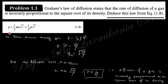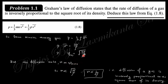We must prove this from equation 1.8, which is the pressure equation from kinetic theory of gas: pressure equals one-third ρ·v_rms². From this, v_rms equals the square root of 3P/ρ. Since the diffusion rate R must be proportional to the RMS velocity — higher velocity means higher diffusion rate — R is proportional to √(P/ρ), and therefore R is inversely proportional to the square root of density ρ.